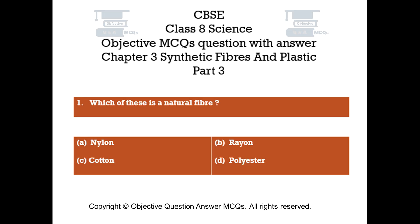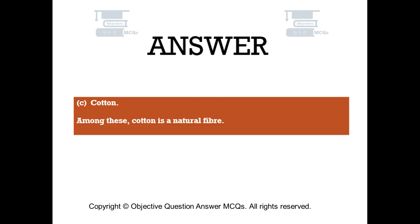Question number one. Which of these is a natural fiber? Option A: nylon. Option B: rayon. Option C: cotton. Option D: polyester. The right answer is option C — cotton. Among these, cotton is a natural fiber.